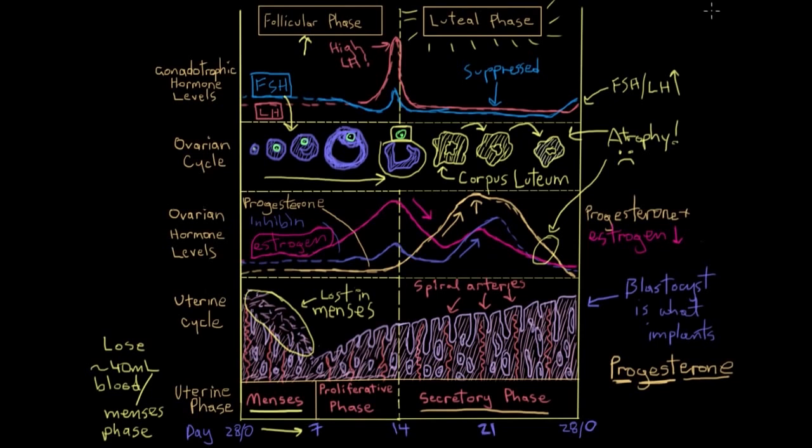Now, what I told you about the corpus luteum withering away and dying is only actually true when no pregnancy is occurring. That's the case in most reproductive cycles, and that's why I covered that first. But it's important to know that things are a little different if pregnancy does occur and a fertilized egg is indeed implanted into the endometrium. We said that the corpus luteum's estrogen and progesterone release suppresses FSH and LH, and suppression of FSH and LH in turn caused the corpus luteum to atrophy, right? That's because the corpus luteum needs luteinizing hormone to survive.